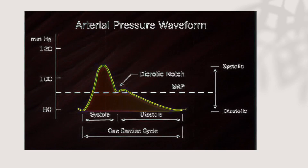We need a quick revision of the arterial pressure waveform before starting the timing for inflation and deflation of the balloon. One cardiac cycle is composed of two parts: systole and diastole. In the systolic part, we find the upstroke — the opening of the aortic valve — and the dicrotic notch, which is the closure of the aortic valve. This is the diastole. All the area under the curve represents the mean arterial blood pressure, an important point to remember during waveform interpretation.